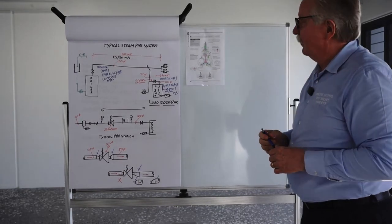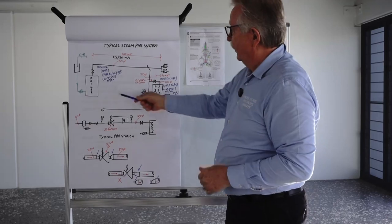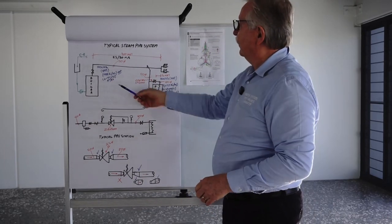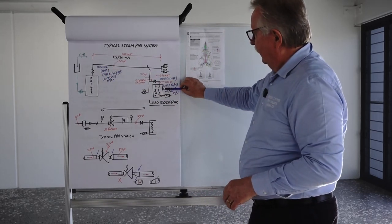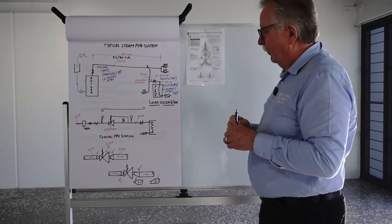In a typical steam system, the steam is usually generated at high pressure in a steam boiler such as this, and then that steam normally gets distributed to the plant where the steam is used for processing whatever you're making.